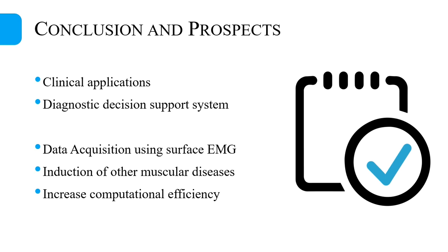The proposed diagnostic system can be used in clinical applications as it can handle wide variability in EMG signals, and can serve as a diagnostic decision support system that assists doctors in making decisions about ALS disease. In the future, we are looking to acquire our own dataset using surface EMG signals from ALS patients in Pakistan. The classification can be extended to other neuromuscular disorders like myopathy, and efforts can be made to increase computational efficiency by reducing the feature vector without compromising accuracy.